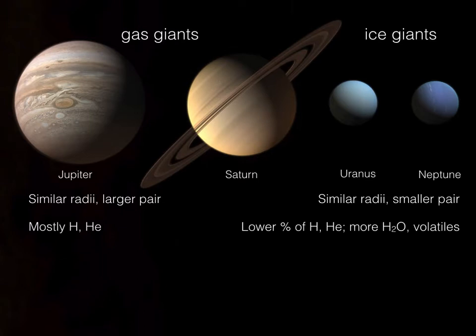The second major characteristic is their composition. Jupiter and Saturn largely consist of mostly hydrogen and helium, whereas the ice giants do have hydrogen and helium, but at a much lower percentage. Instead, what you find in the ice giants are more water and other volatiles such as ammonia and methane. These ice giants are so far away from the sun that it's actually cold enough for these molecules to condense.